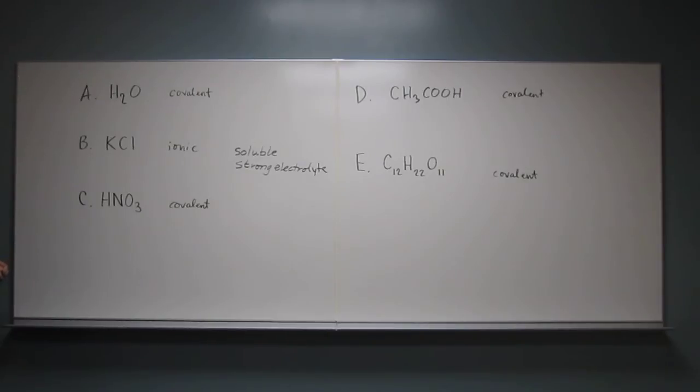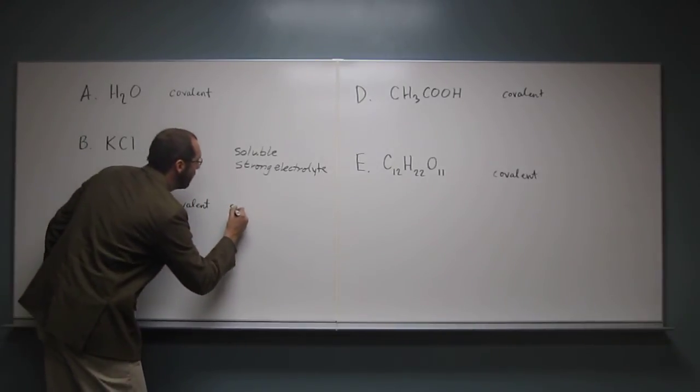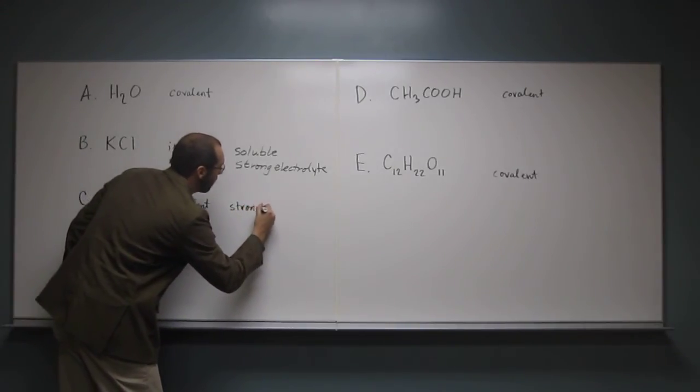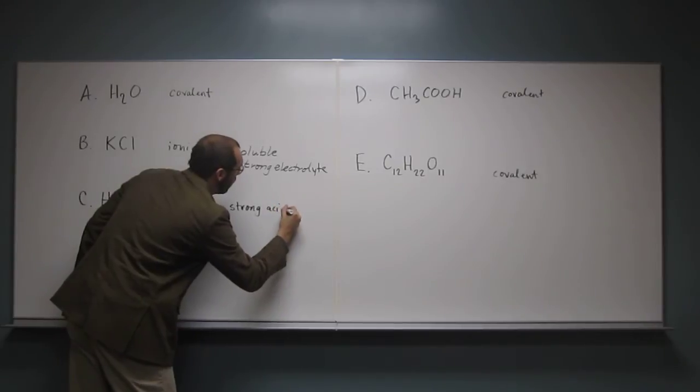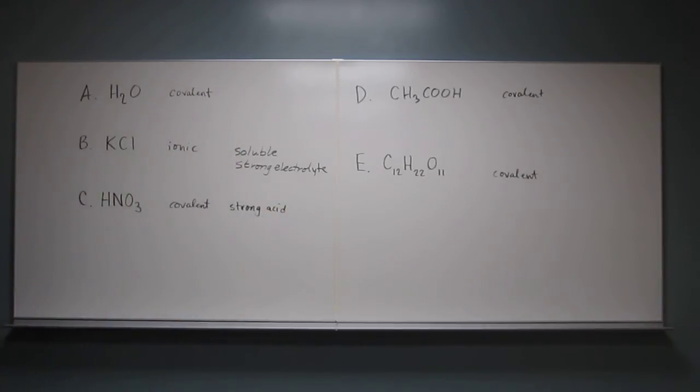So I can see two acids up here. One of them's a strong acid and one of them's a weak acid. Can you identify which ones they are? Strong acid, HNO3. HNO3, nitric acid. So this is a strong acid. So this is the next step you want to do. If you can find for your covalent molecules which are strong and which ones are weak acids.